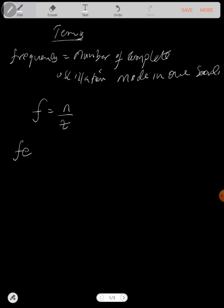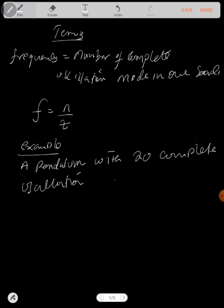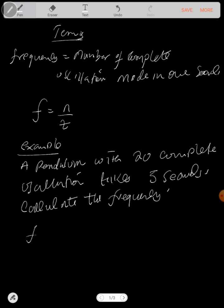For example, a pendulum with 20 complete oscillations takes 5 seconds. Calculate the frequency. Note that frequency equals number of complete oscillations over time taken, f = n/t = 20/5. Make sure that your time is in seconds. Then we have 4. Frequency is measured in hertz, so we call it hertz, but the symbol is Hz. That's how you find the frequency.